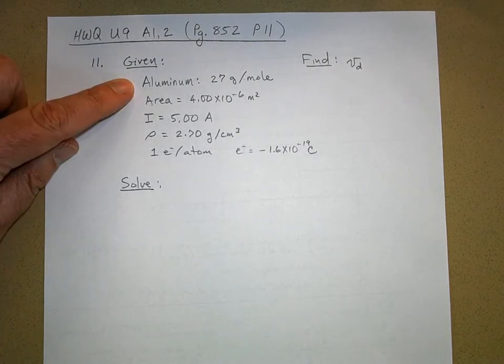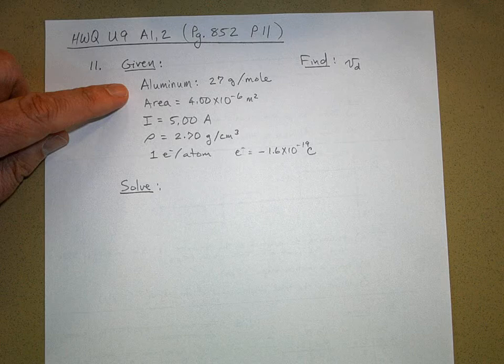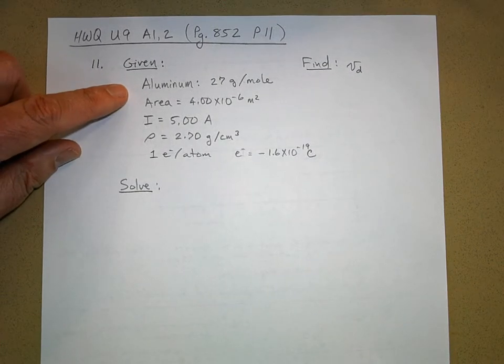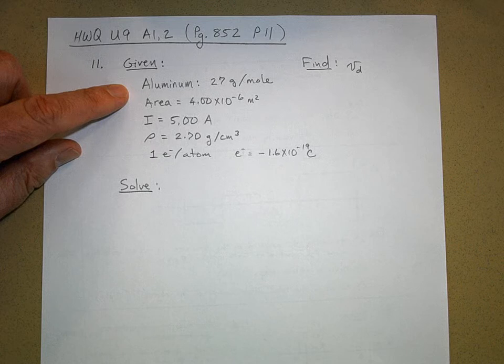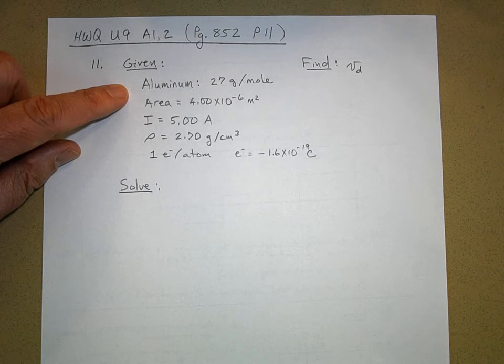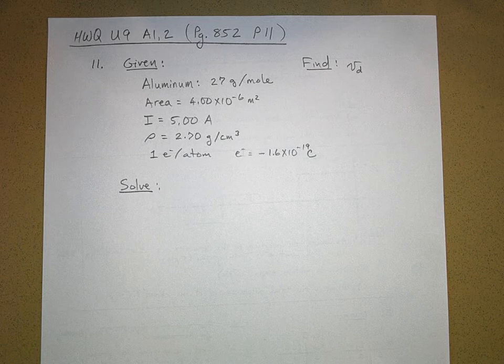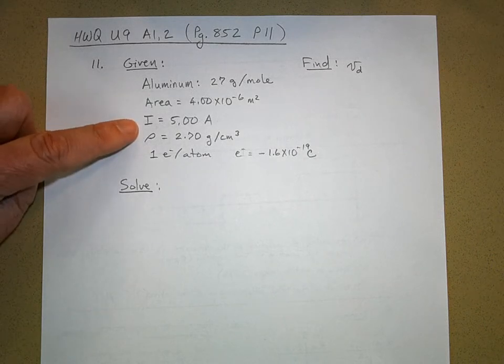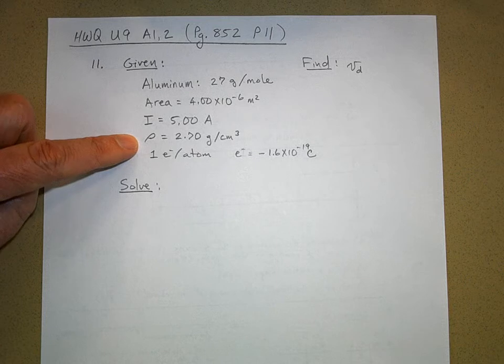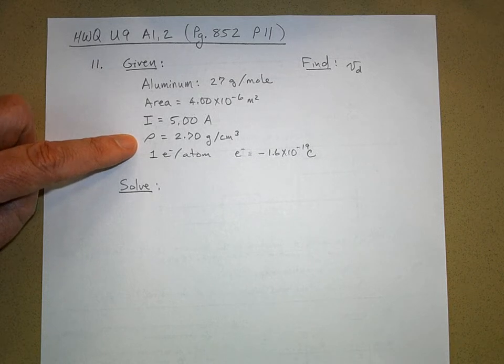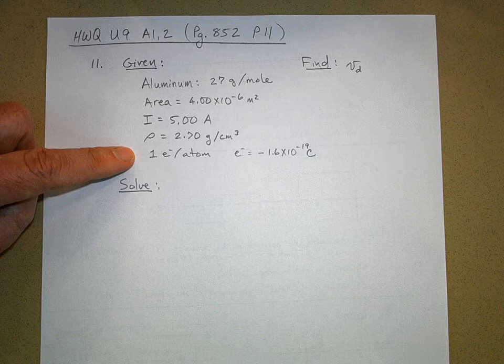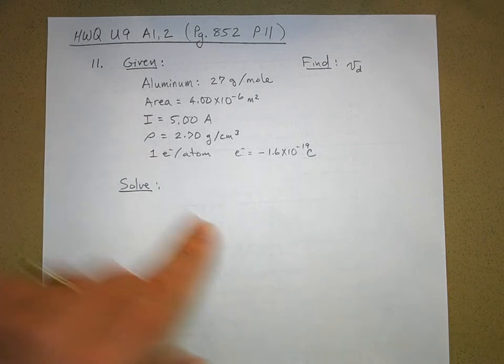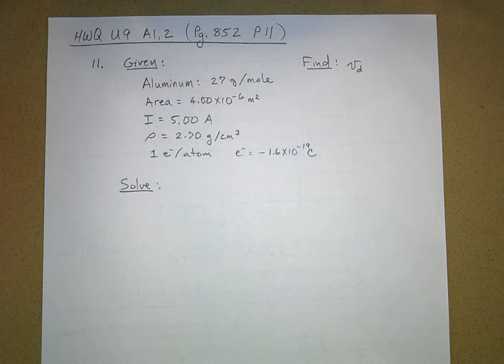The density of the aluminum is 2.7 grams per cubic centimeter. Assume that one conduction electron is supplied by each atom. So we have aluminum, and you need to know, it didn't give it to you in the problem, you have to look it up. I just google everything. Which is 27 grams per mole.